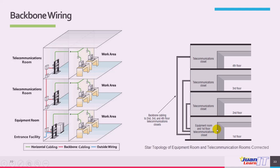The equipment room is also known as the main distribution facility or MDF. The core backbone cabling infrastructure is usually a vertical cabling system running between floors.